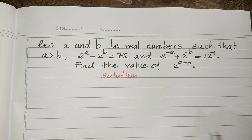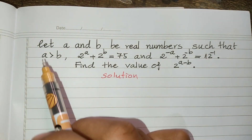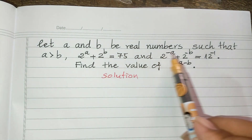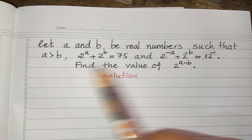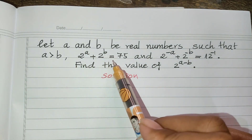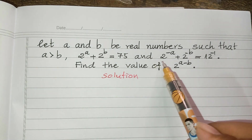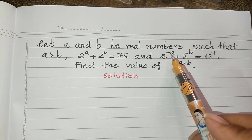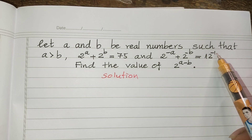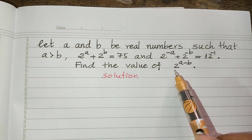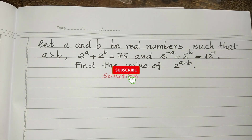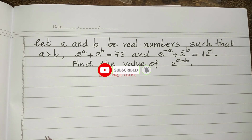Hello everyone, welcome to my YouTube channel. Today I have one exercise: let a and b be real numbers such that a is bigger than b. 2 to the power a plus 2 to the power b equals 75, and 2 to the power negative a plus 2 to the power negative b equals 1/12. Find the value of 2 to the power a minus b. Before we go to the solution, please don't forget to subscribe to my channel for more exciting videos.